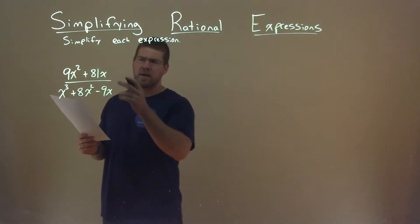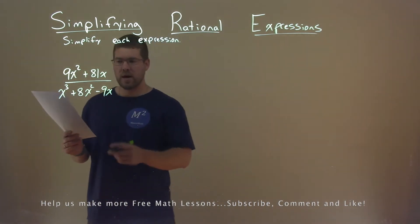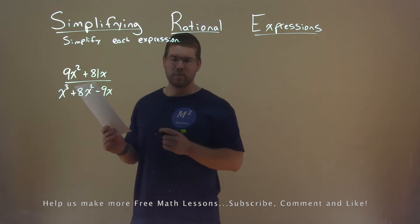We're given this problem right here: 9x squared plus 81x over x to the third power plus 8x squared minus 9x, and we want to simplify this expression.